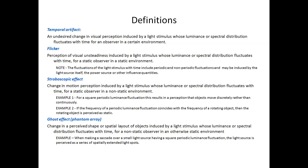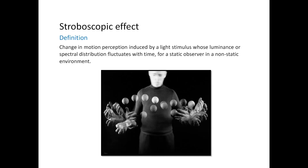I'll start with the stroboscopic effect — the change in motion perception induced by a light stimulus that changes over time for a static observer in a non-static environment. I'll show a video demonstrating the difference between flicker and the stroboscopic effect. On the left you will see flicker; on the right you will see nothing at first because nothing is moving. The moment my colleague starts waving a chopstick — which is a really good detector of the stroboscopic effect — you will start seeing the stroboscopic effect on the right. On the left, when she moves the chopstick, the stroboscopic effect is not visible; on the right, it is.